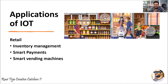In the retail sector, consider a smart supermarket — as soon as you pick a product, it is scanned and a bill is generated automatically, which is sent directly to your phone. Smart vending machines and smart payment systems are also part of this. Several new concepts are emerging with the help of IoT technology in the retail aspect.